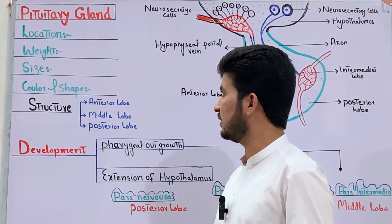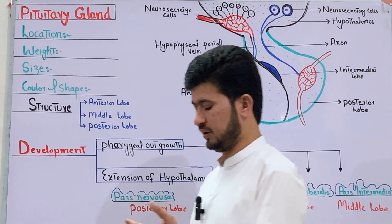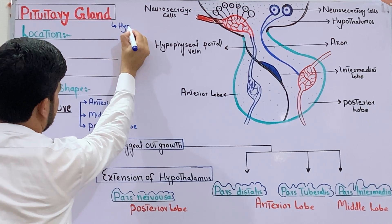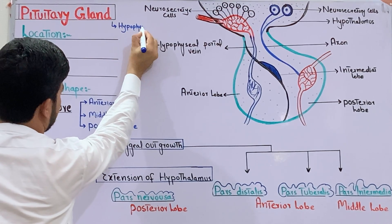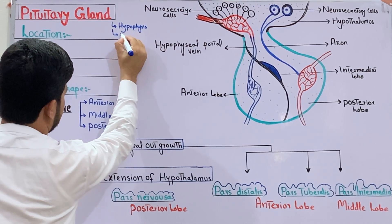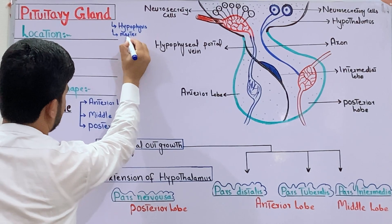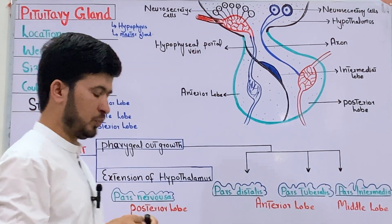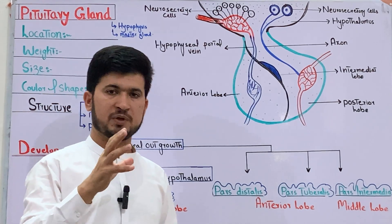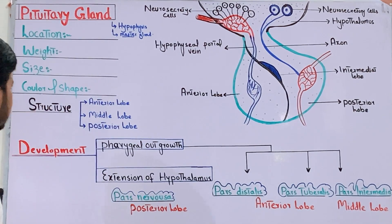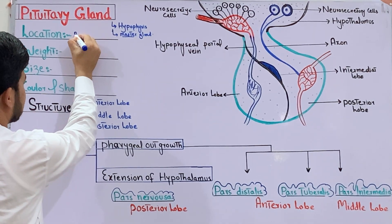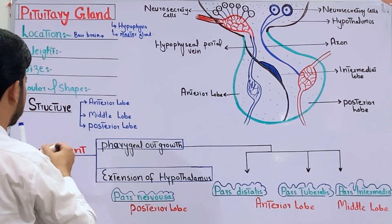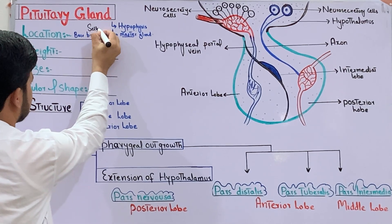The pituitary gland is also called hypophysis — that is its scientific term. It is also called the master gland, meaning the main gland. It is located at the base of the brain.